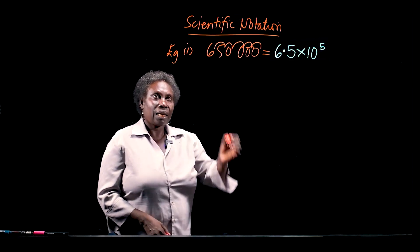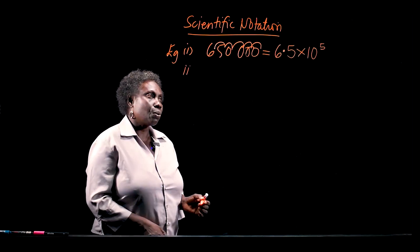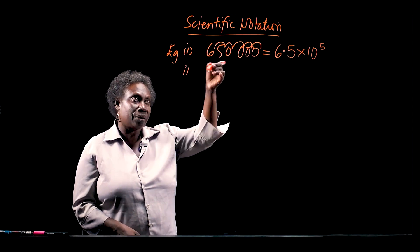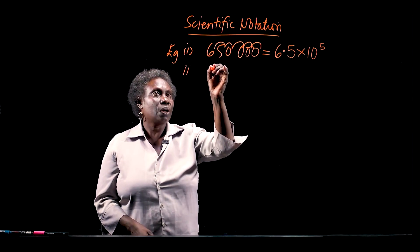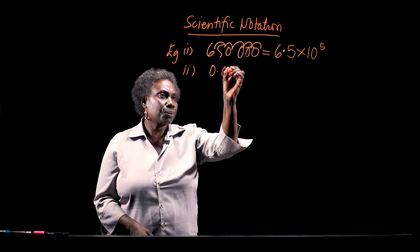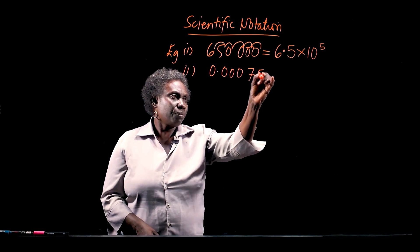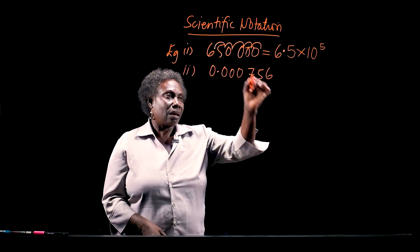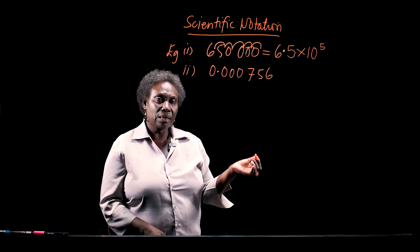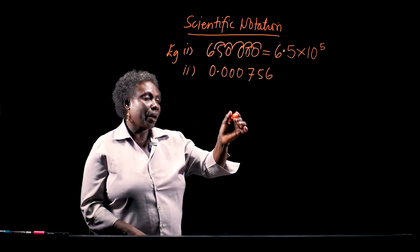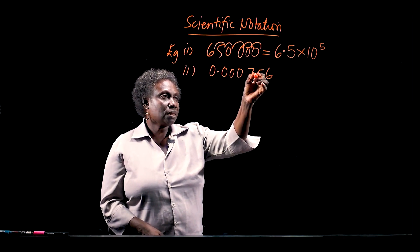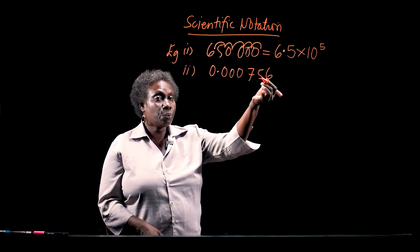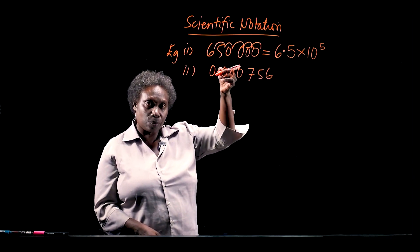Now, second example. We are going to write a very, very tiny number in scientific notation. Let's have 0.000756. The decimal point is here, but when we are writing numbers in scientific notation, we always put the decimal point between the first and the second significant figure, and we count the number of places we move to where the decimal point is.